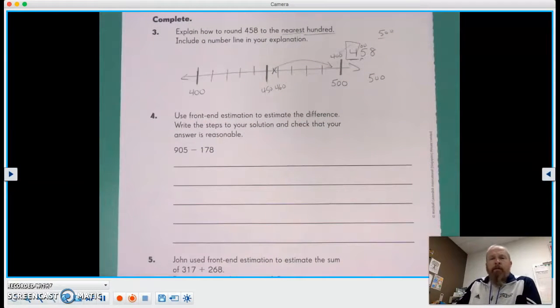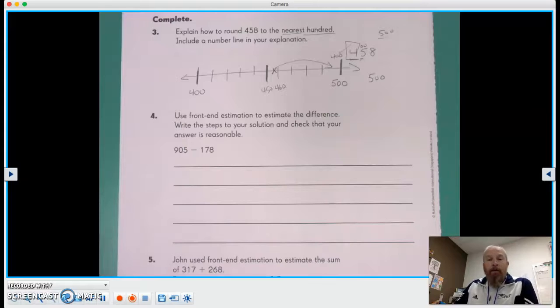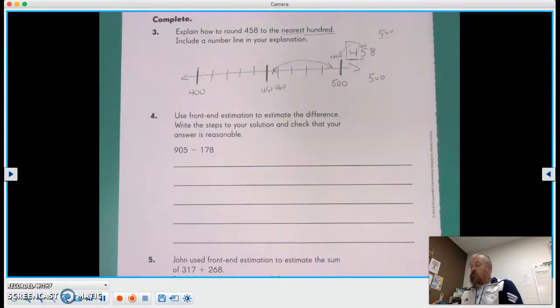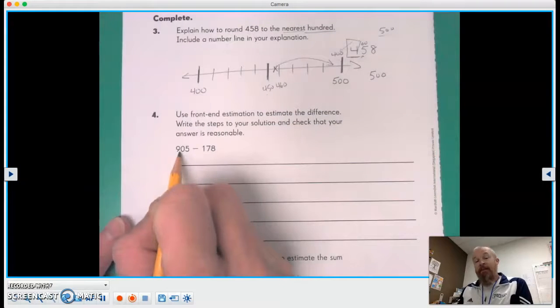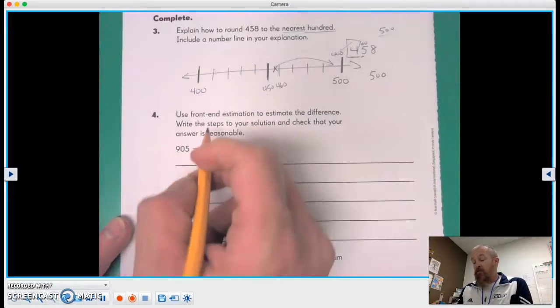Now it says use front-end estimation to estimate the difference. Write the steps to your solution and check that your answer is reasonable. So front-end estimation, we're gonna take the nine, the first digit, so 900.